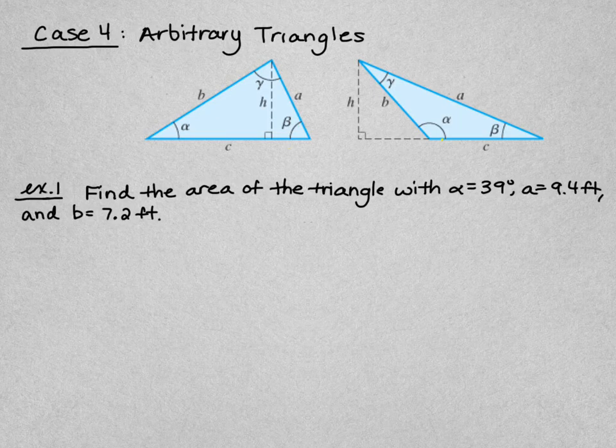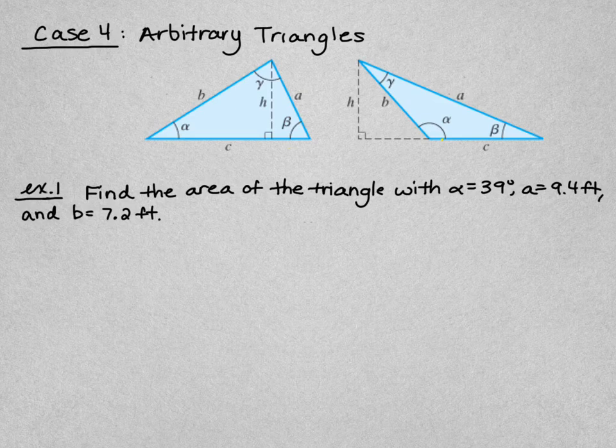Now what about case four? These are arbitrary triangles where we aren't given three sides, two sides and an included angle, or even the base and height. We can use what we've learned in this chapter — namely the Law of Sines and the Law of Cosines — to figure out how to apply those area formulas.